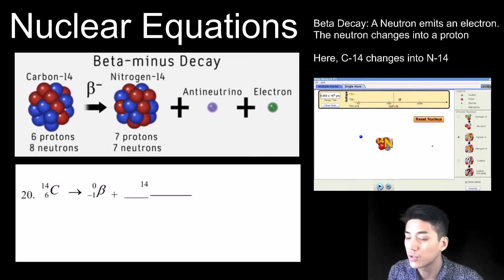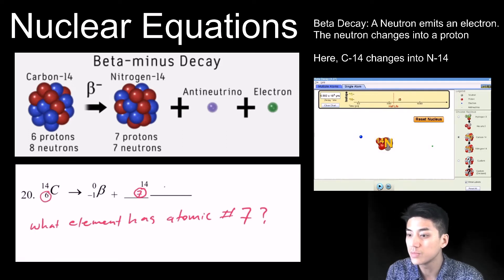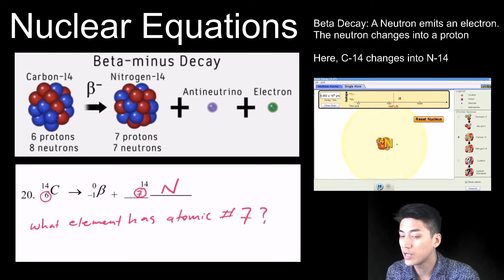Notice how carbon-14 starts with 6 protons, 8 neutrons. When it undergoes beta decay, one of the neutrons becomes a proton.